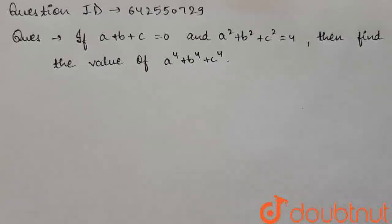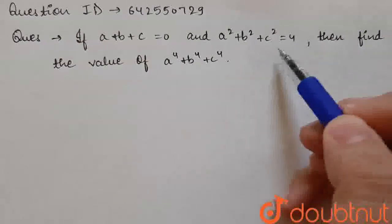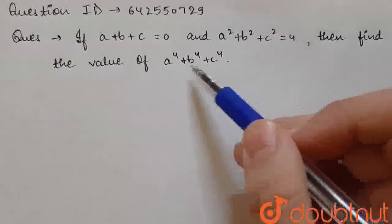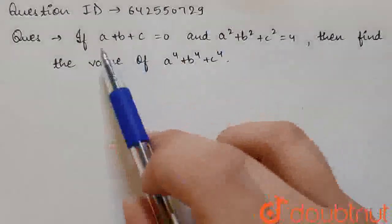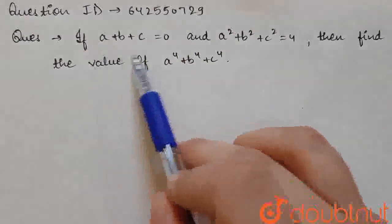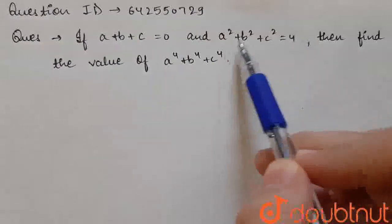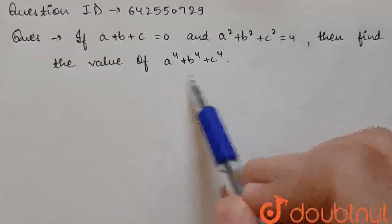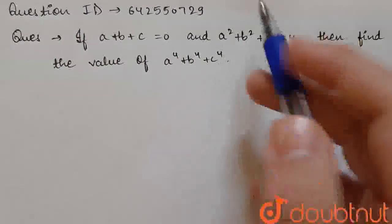Hello friends, our today's question is: if a plus b plus c equal to 0, and a square plus b square plus c square equal to 4, then find the value of a to the power 4 plus b to the power 4 plus c to the power 4. So in the question, the value of a plus b plus c is given as 0, and the value of a square plus b square plus c square is given as 4. We have to find the value of a to the power 4 plus b to the power 4 plus c to the power 4.